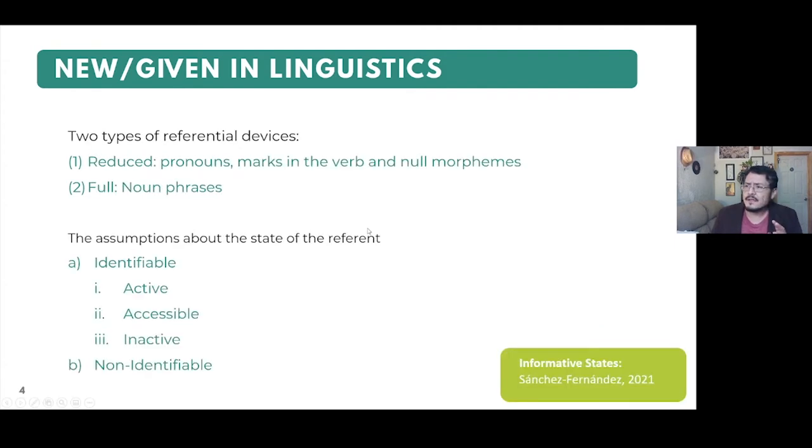There are two ways in which referents are formalized in discourse through referential devices: reduced and full. The reduced forms, in the case of Spanish, are pronouns, marks in the verb, and null morphemes. They imply that the speaker, when articulating such construction, supposes that the listener has in their working memory that referent in mention. On the other hand, if a full referential device is used, a noun phrase, it articulates the speaker's assumptions that the referent in question is not found in the listener's working memory.